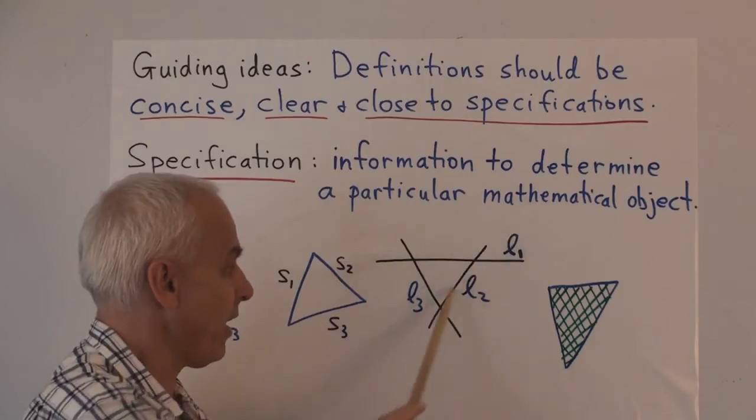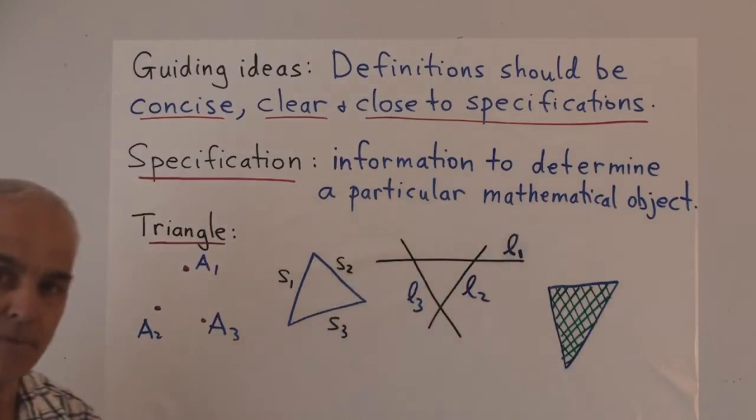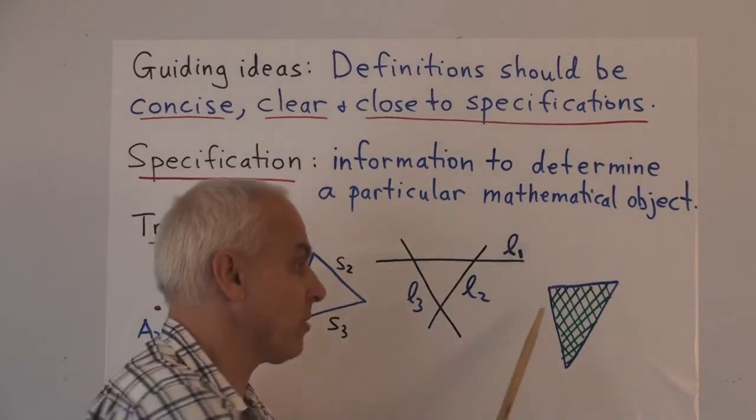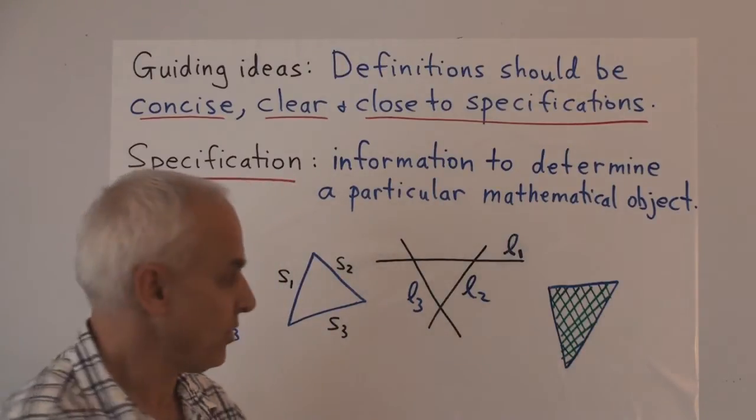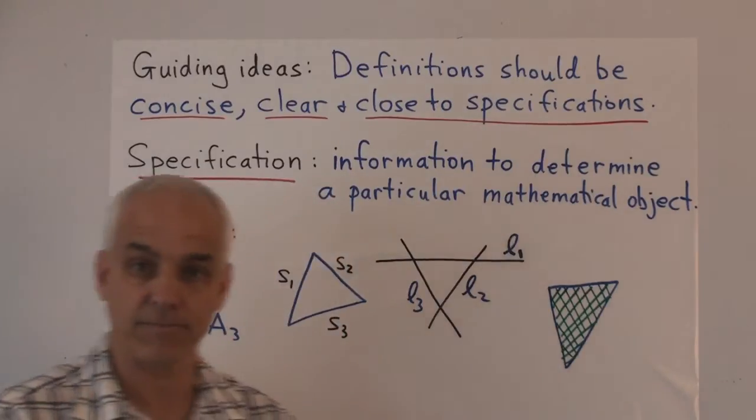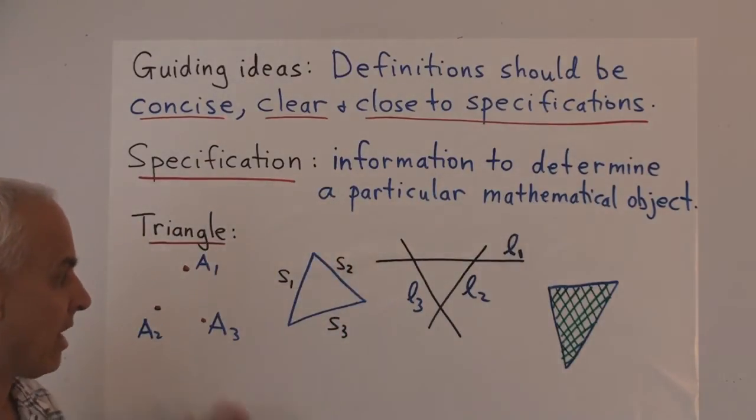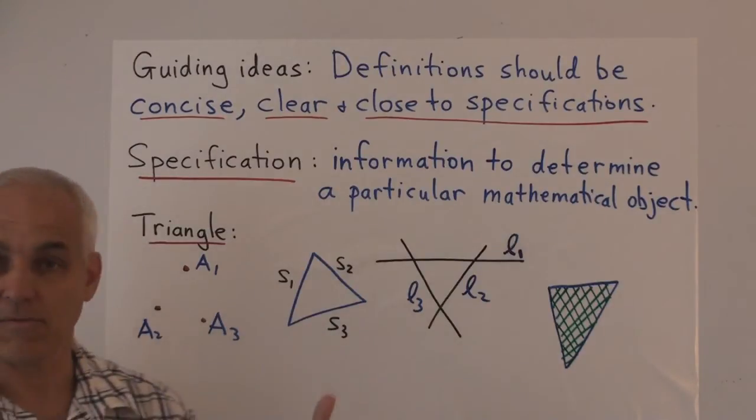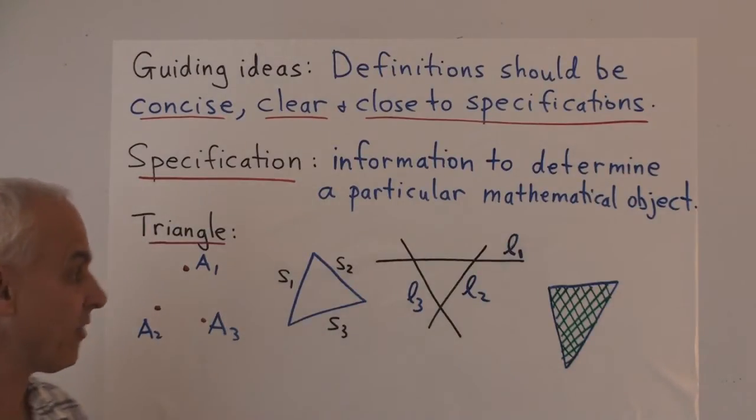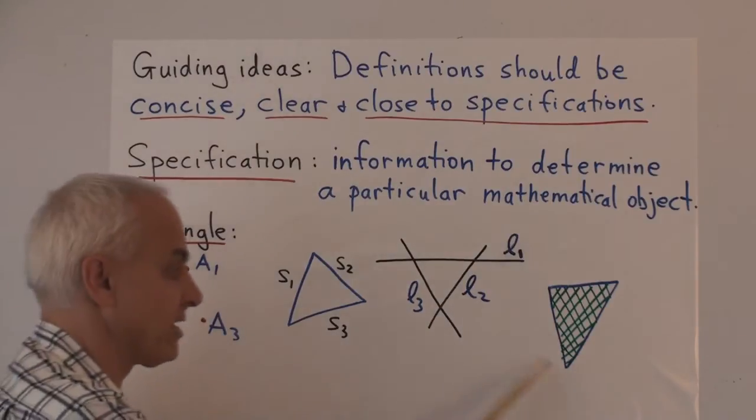Or you could define a triangle in terms of three lines L1, L2, L3. Or you could define a triangle in terms of the area or the region bounded by it. So you could think of this actual region as being the triangle. Now I'm not saying that these are wrong. These are all legitimate variants or possibilities.